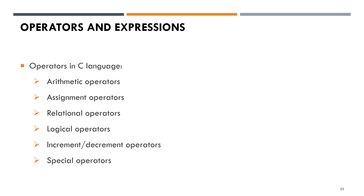Operators and expressions. Operators in C language include arithmetic operators, assignment operators, relational operators, logical operators, increment/decrement operators, and special operators.